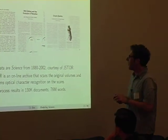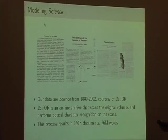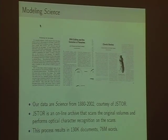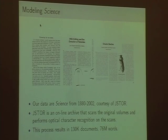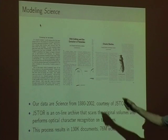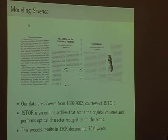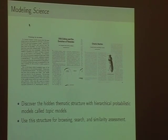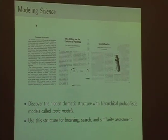So what this project is about: our data is Science magazine from 1880 to 2002, courtesy of JSTOR. JSTOR takes original volumes of journal articles, scans them, runs OCR software on them, and then indexes the resulting noisy ASCII texts so that scholars and scientists can search through hundreds of years of scholarly literature. We want to take this collection and discover the hidden thematic structure that lives inside it with what are called topic models.